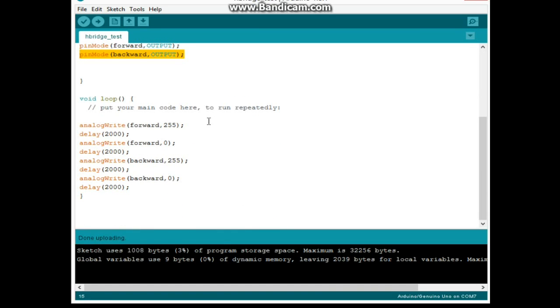And then here is the code to go forward. We're going forward at full speed here. We say analogWrite forward 255, on for two seconds, analogWrite forward zero. That stops the motor and delay for two seconds.